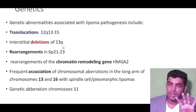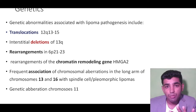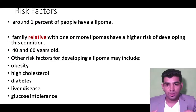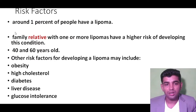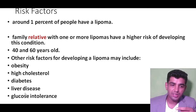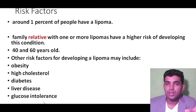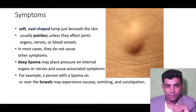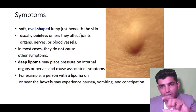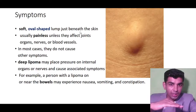Familial causes are the most important risk factor for lipoma and liposarcoma. Other risk factors include obesity, high cholesterol, diabetes, liver disease, and glucose intolerance, all of which may increase the risk of lipoma. Lipoma presents as a soft, oval-shaped lump just beneath the skin and above the smooth muscle.